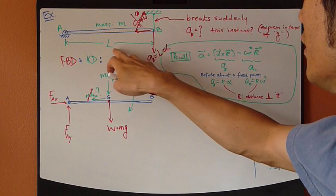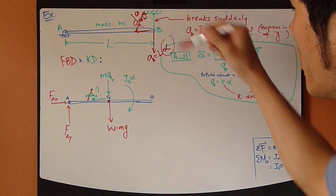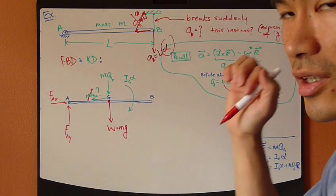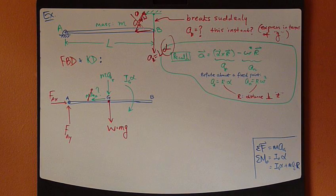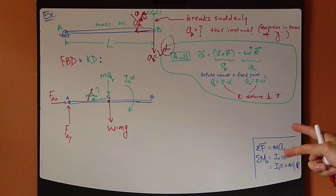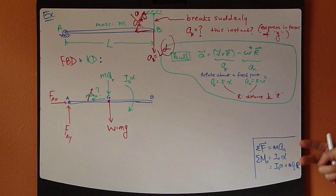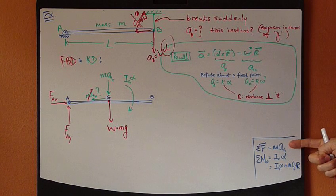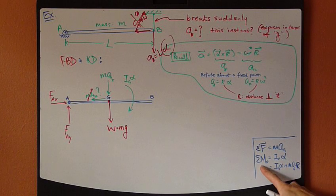Now, length is a constant. So, really, the unknown in this problem becomes alpha. So, how do we find alpha? Well, let's look at the two equations that we have available under this Newton's second law method. The linear equation, force equals ma, and then the moment equation.